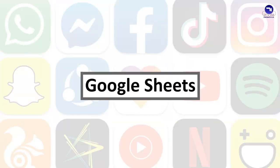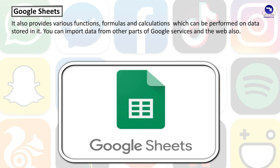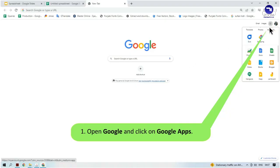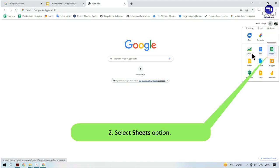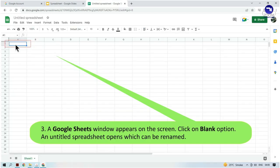Google Sheets is a web-based spreadsheet program, just like MS Excel, and is part of a web-based software office suite. It works similarly to Excel and is used to organize data in tabular form. Using Google Sheets, you can create, update, modify, and analyze a spreadsheet which can also be shared with other people. It provides various functions, formulas, and calculations that can be performed on stored data, and you can import data from other Google services and the web. To create a new Google Sheet: open Google and click on Google Apps, select the Sheets option, and a Google Sheets window appears. Click on Blank — an untitled spreadsheet opens which can be renamed.